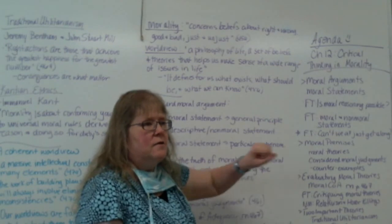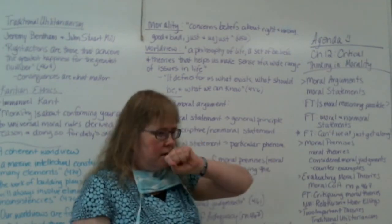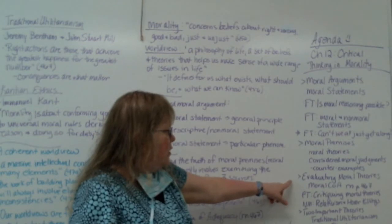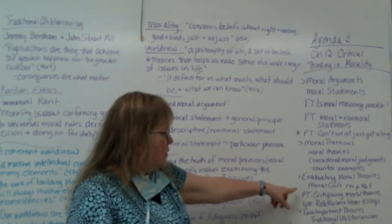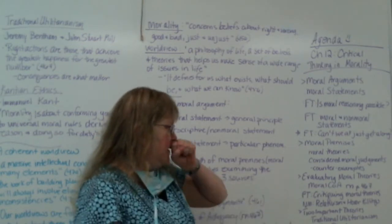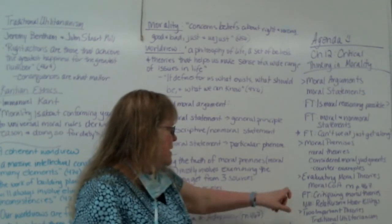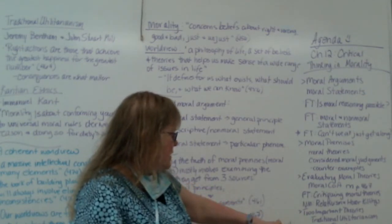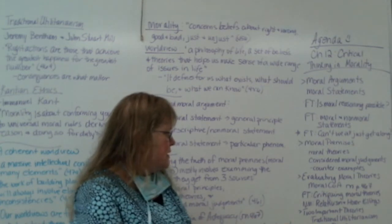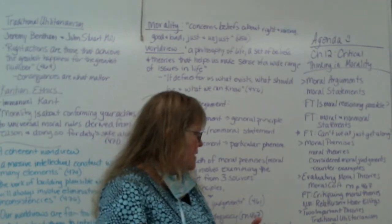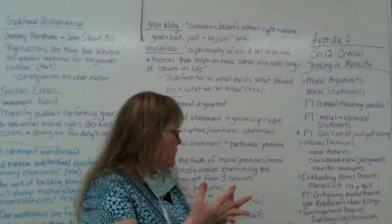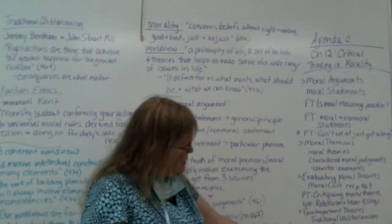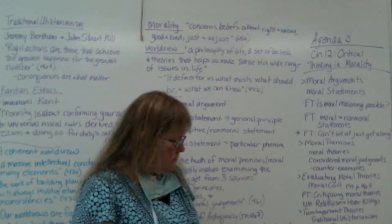Some things going on right now politically could benefit from some counterexamples. We'll also look at evaluating moral theories, the moral criteria of adequacy, critiquing moral theories, relativism, two important theories — traditional utilitarianism and Kantian ethics — with a little bit about moral dilemmas, and lastly our coherent worldview.